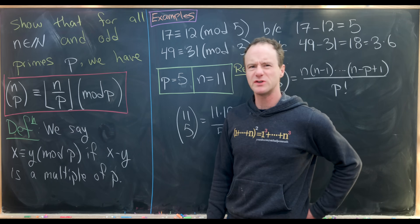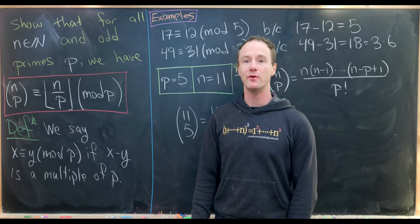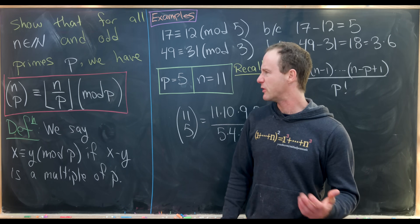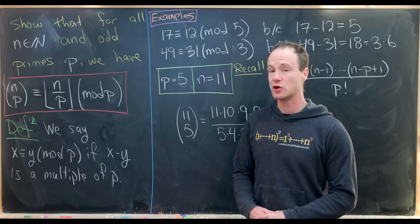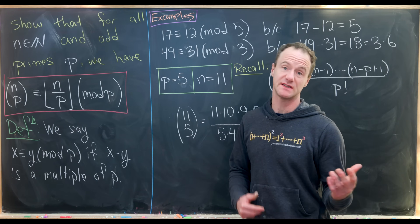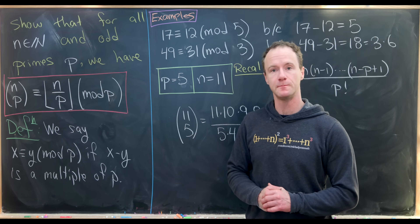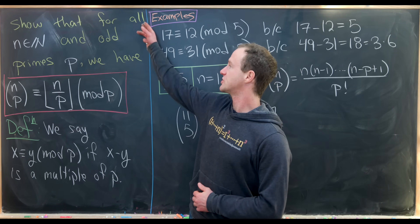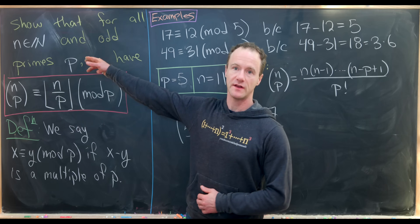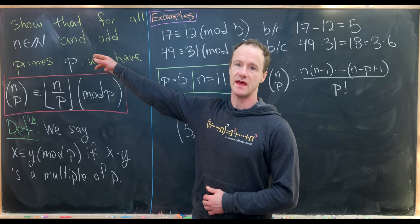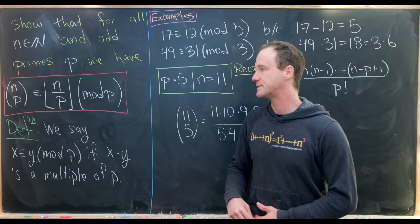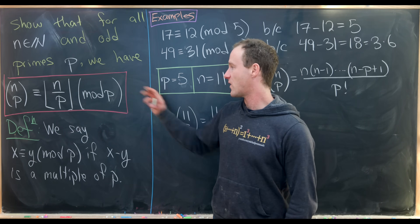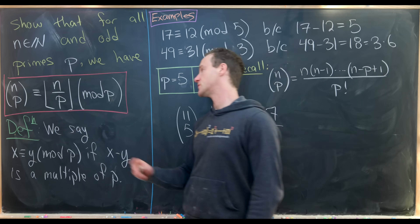Here I've got a nice problem which is something I would give at the beginning of an elementary number theory class, maybe right after you learn what it means to be congruent mod n. Our goal is to show that for all natural numbers n and odd primes p, we have the following congruence.